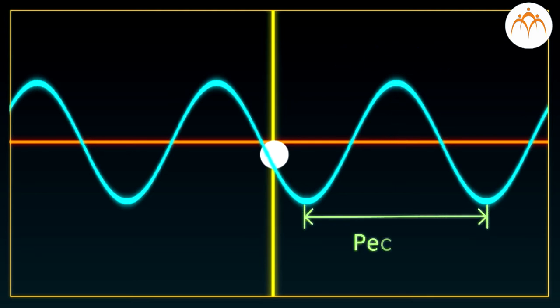Period of the sound wave can be defined as the time an air molecule takes to fully move back and forth one time. This back and forth motion is called as a cycle. The period is measured in seconds.